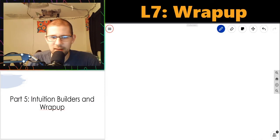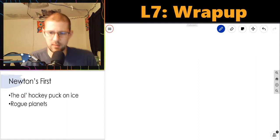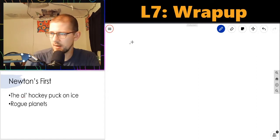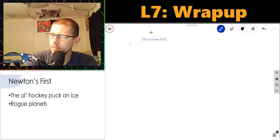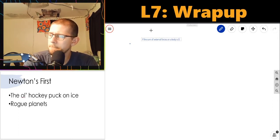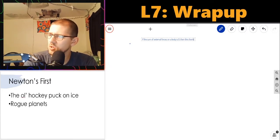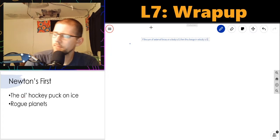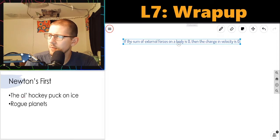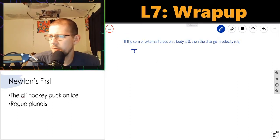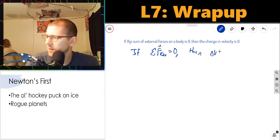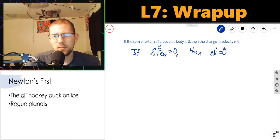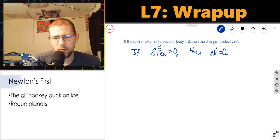Okay, so the first law I want to touch is the first law. So Newton's first law says that if the sum of external forces on a body is zero, then the change in velocity is zero. In other words, velocity is conserved.